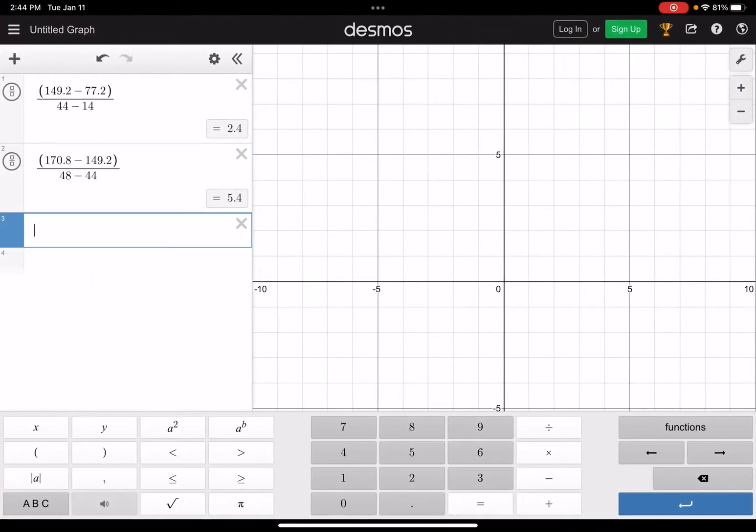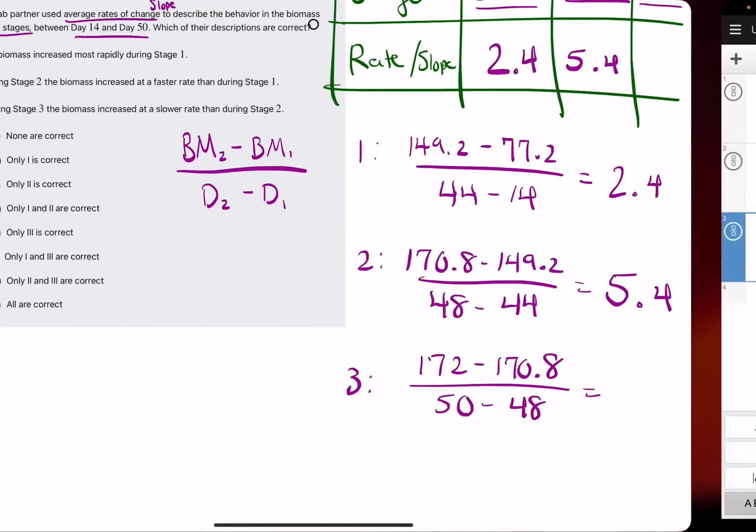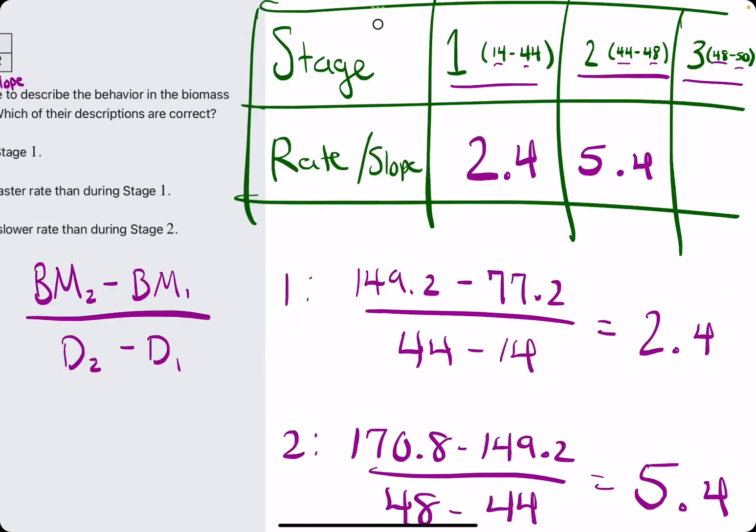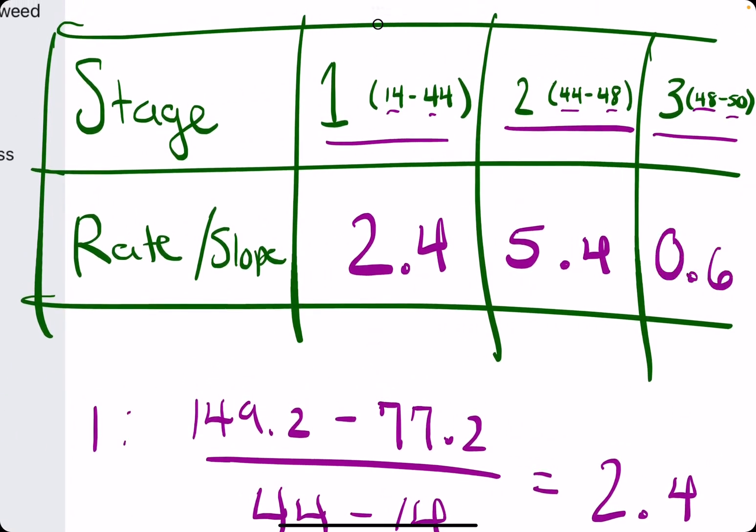And the last one, 172. Excuse me. Minus 170.8, all divided by, I think it was 50 minus 48. And we get 0.6. So we'll plug that in there.